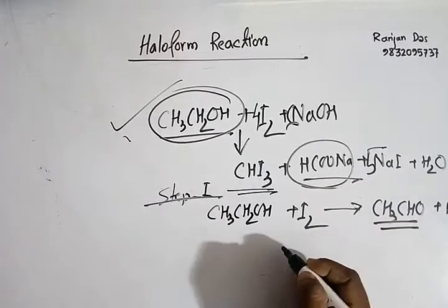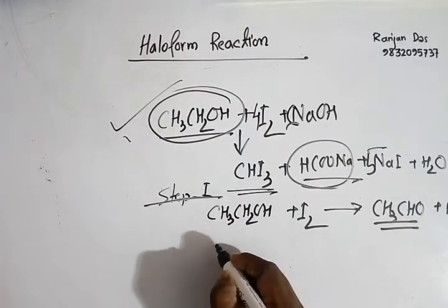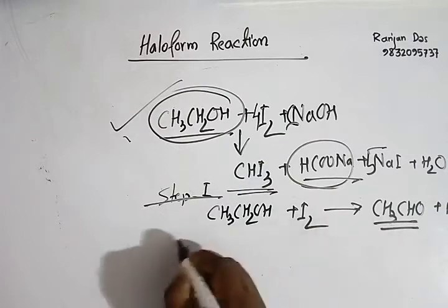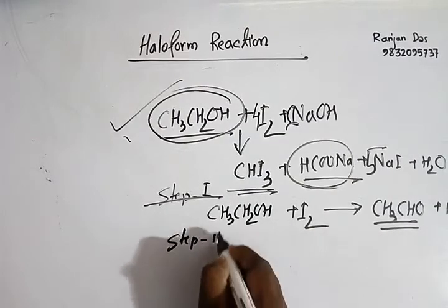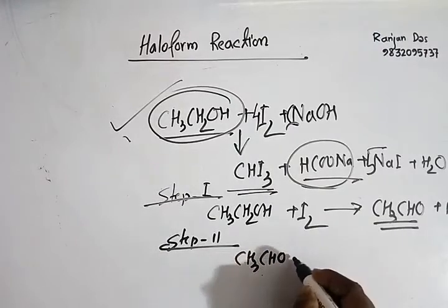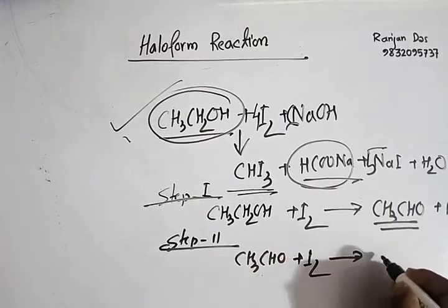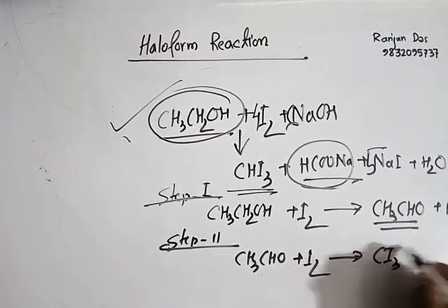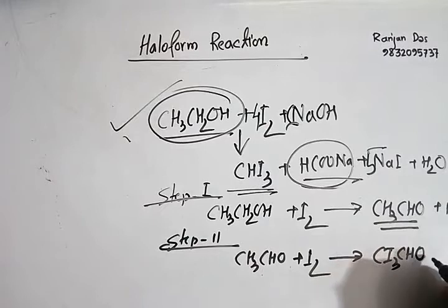The second step: CH3CHO which has just produced in step one undergoes halogenation. Halogenation, and here the halogenation is iodination, and the products are CI3CHO with the side product HI.